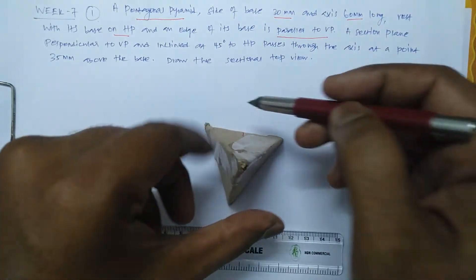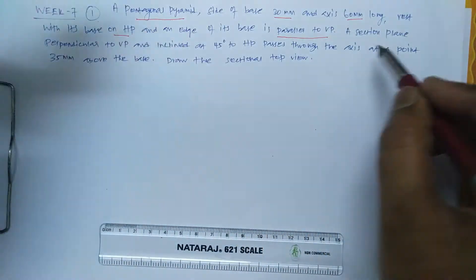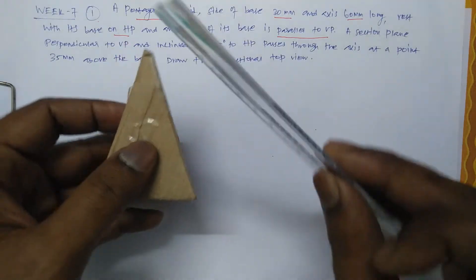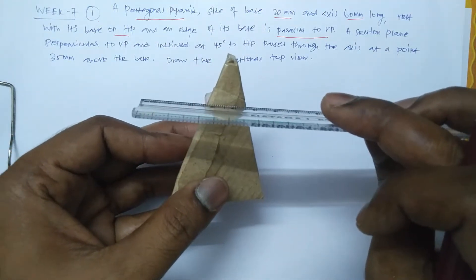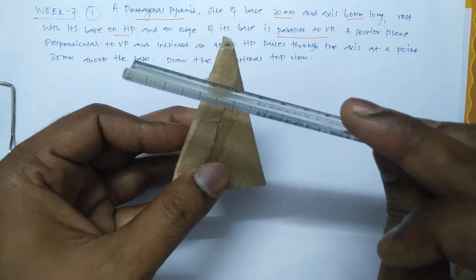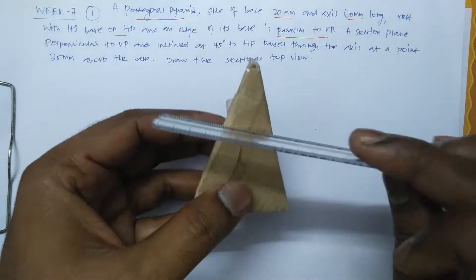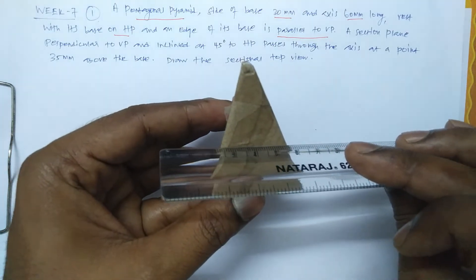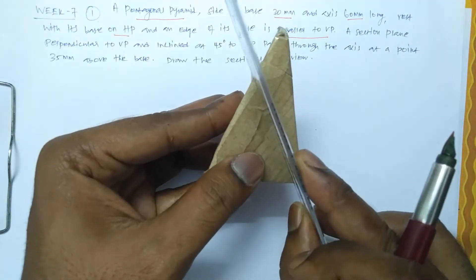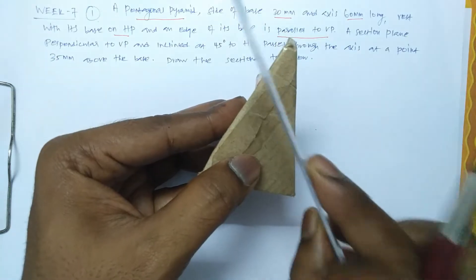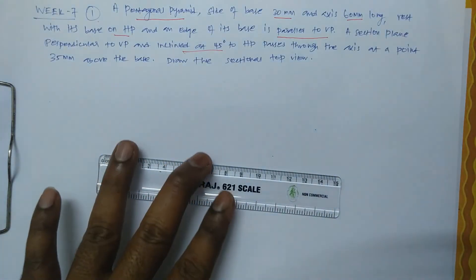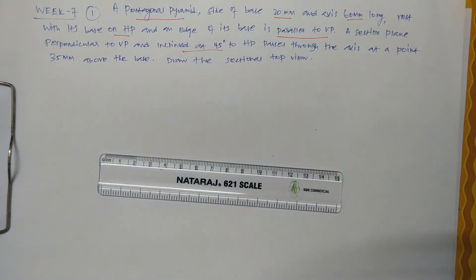The base edge is parallel to VP. The section plane is perpendicular to VP — imagine one plane cutting through, perpendicular to VP. It is also inclined at 45 degrees to HP, so it cuts like this. The same pentagonal pyramid we are going to cut and look at the top view.